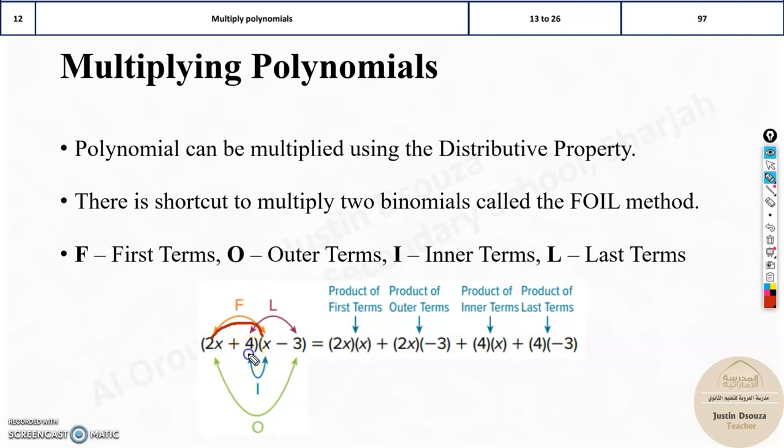Then outer terms. After F, O comes, that is outer. This is the outermost and this is the outermost term. So O is the next one. That is 2x times minus 3. Then inner ones are these two. They are the innermost ones, 4 times x.